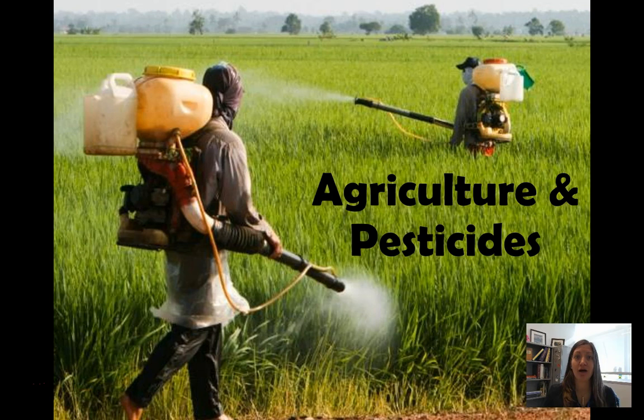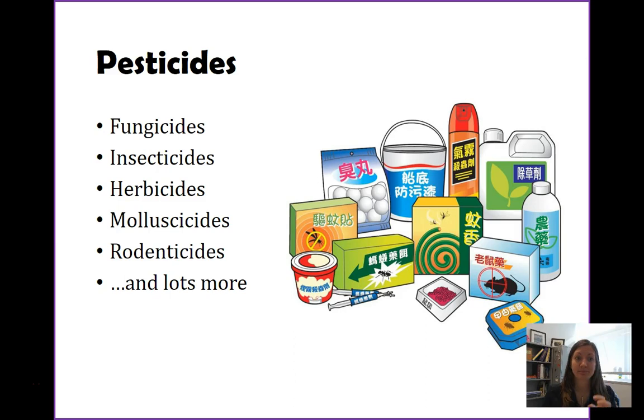The next topic in agriculture we'll talk about is our use of pesticides. We'll discuss chemical pesticides, which is what you see in this picture, as well as more natural pesticides and deterrents.